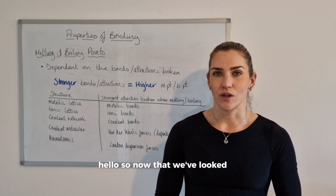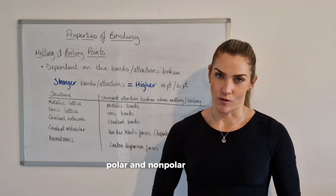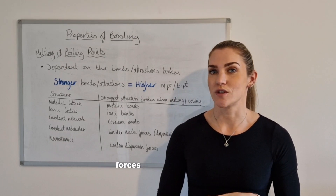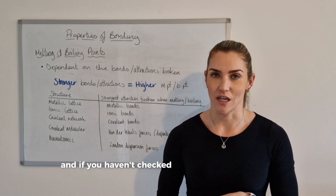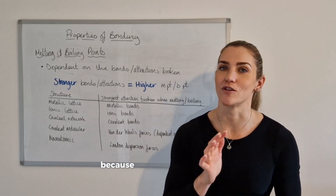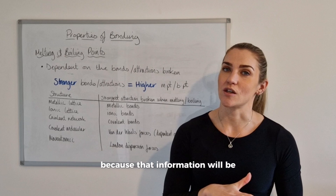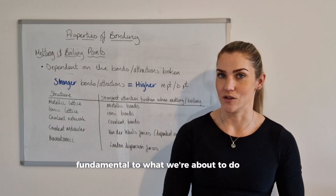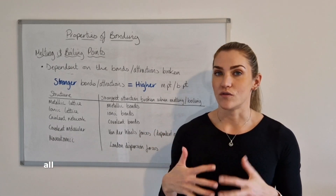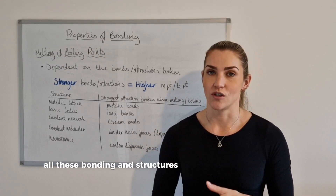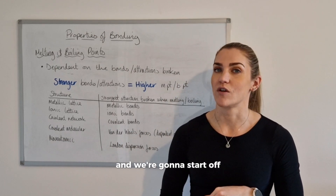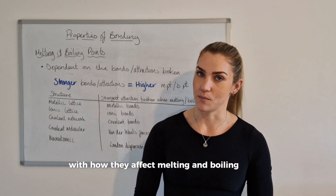Hello. Now that we've looked at polar and non-polar molecules and how to identify the types of van der Waals forces in those molecules — and if you haven't checked out those videos already you can find them on the Higher Chemistry playlist, as that information will be fundamental to what we're about to do now — we're going to look at how all these bonding structures affect the properties of substances, starting with melting and boiling points.